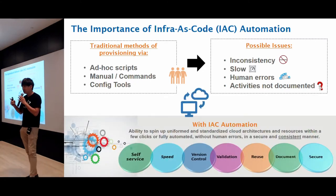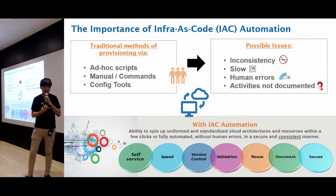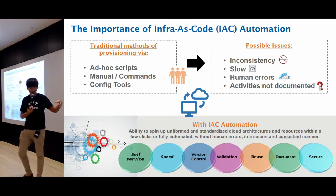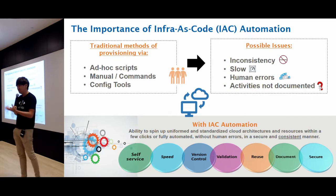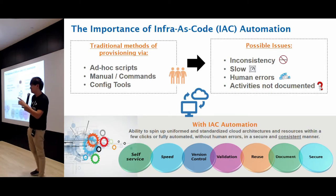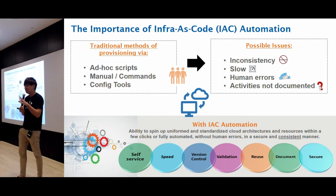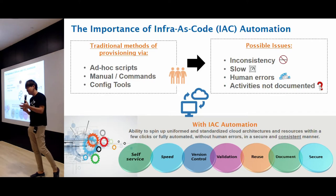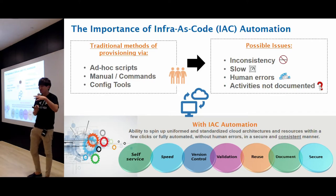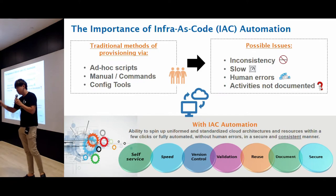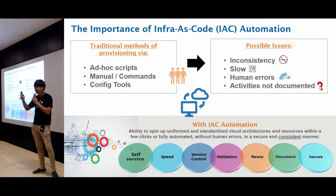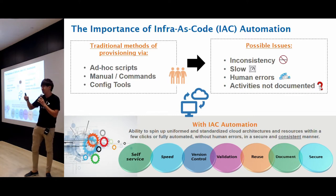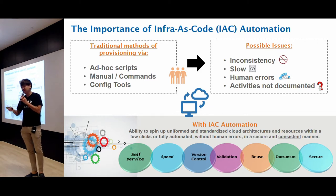With IAC automation, Samuel and Hunter have covered the benefits pretty well — speed, consistency. One of the key things is version control. The minute you remove humans from the equation, we no longer need to find which engineer or administrator made changes to certain resources. Those days are gone with a proper implementation of IAC. Weeks can turn into a couple of days, or in the cloud, just hours.